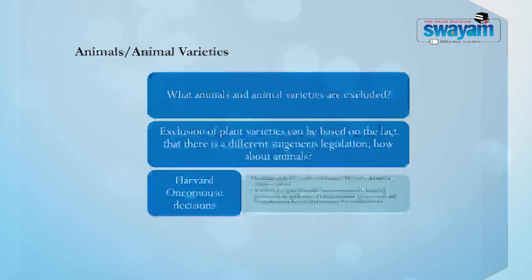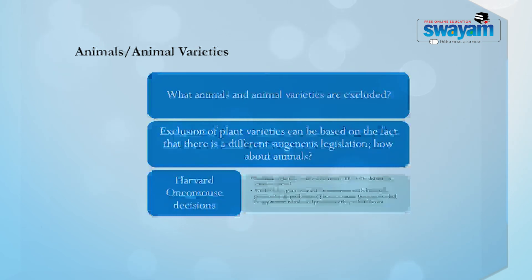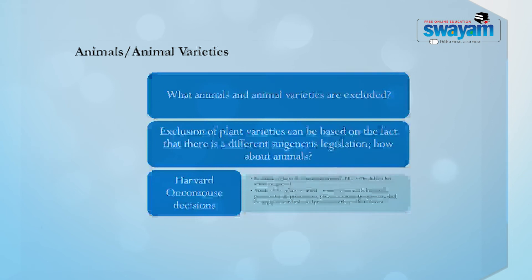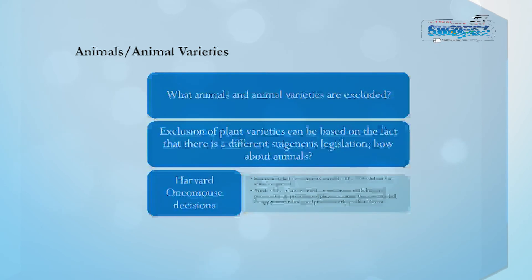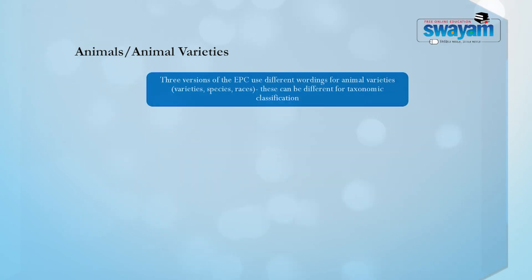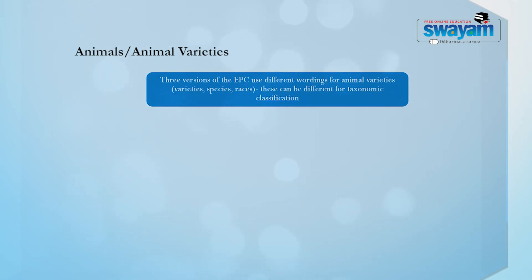Article 53(b) reads: plants or animal varieties or essentially biological processes for the production of plants or animals — this provision shall not apply to microbiological processes or products thereof. So the exclusion seems clear that plant or animal varieties are not to be granted patents. The case went on appeal and finally the conclusion was that there were three versions of the European Patent Convention using different wording for animal varieties — varieties, species, races — and these different classifications can lead to difficulties in interpretation from a taxonomic perspective.